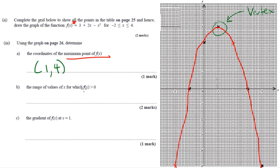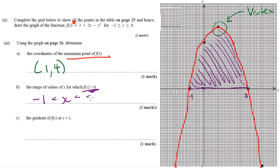The range of values of x for which f(x) is greater than zero means we want the x values where the graph is above zero. You'll notice f(x) is above the x-axis from x equals negative one all the way to x equals three. So the range of values is when x is between negative one and three.